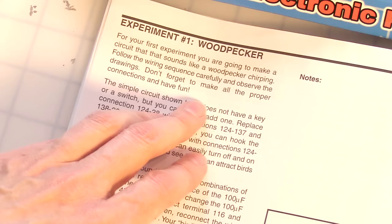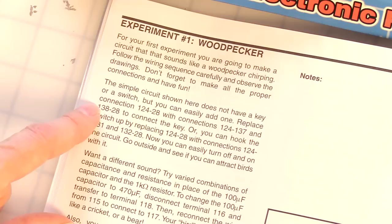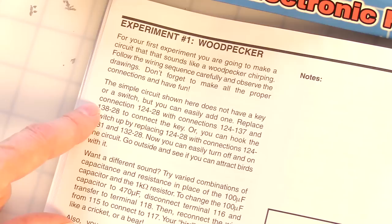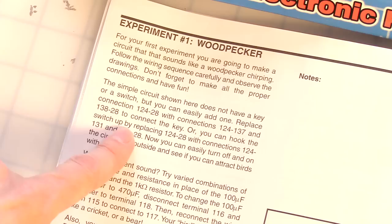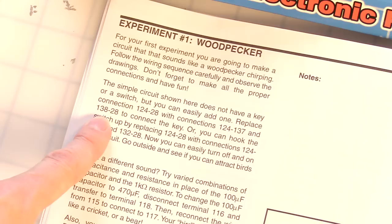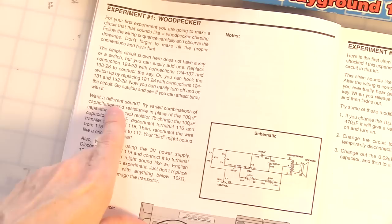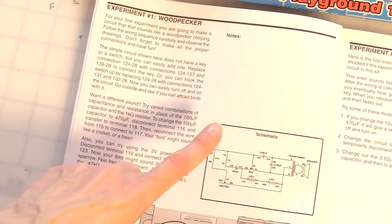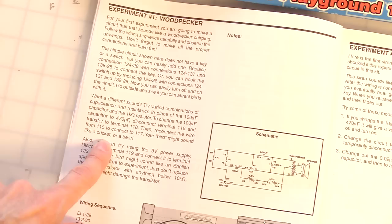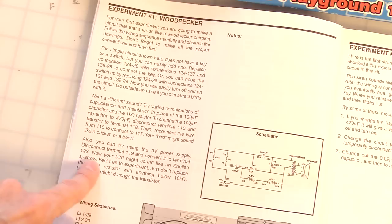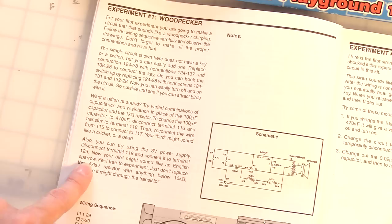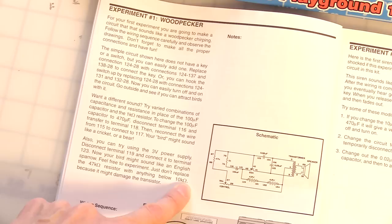All righty. I'm going to be using the full nine volts. We're going to use a transistor, PNP transistor, and use the control pot, some resistors, 100 microfarad cap, 0.02 mic cap, 0.05 mic cap, and hook up to the audio transformer and hook up the speaker. That's what we're going to do. You can read. For your first experiment, you are going to make a circuit that sounds like a woodpecker chirping. Follow the wiring sequence carefully and observe the drawings. Don't forget to make all the proper connections and have fun! Exclamation point! Have fun! The simple circuit shown here does not have a key or a switch, but you can easily add one. Replace connection 124-28 with connections 124-137 and 138-28 to connect the key. Go outside and see if you can track birds with it. That's kind of cool. Yeah. Want a different sound? Try varied combinations of capacitance and resistance in place of the 100 microfarad capacitor and the 1k resistor to change the 100 microfarad capacitor. It tells you how to do that. Your bird might sound like a cricket or a bear. Also, you can try using the 3-volt power supply. Disconnect terminal 119. Now your bird might sound like an English sparrow. Feel free to experiment. Just don't replace the 47k ohm resistor with anything below 10k ohms because it might damage the transistor.